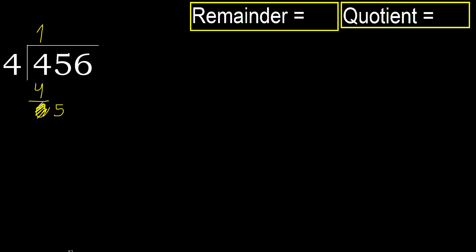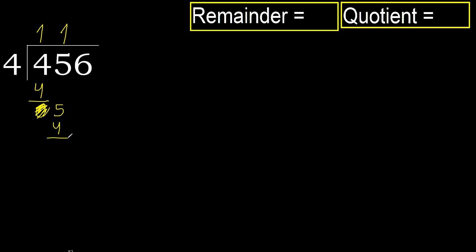Eliminate 0 here. Bring down 5. 4 multiplied by 2 is 8, which is greater. 4 multiplied by 1 is 4, which is not greater. 5 minus 4 is 1. Next.